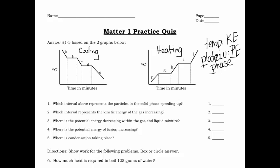Question one: which interval represents the particles in the solid phase speeding up? Whenever you see 'speeding up,' think kinetic energy — that means kinetic energy is changing, which means we're talking about a temperature change, so it's got to be one of the sloped portions of the graph. Since it says 'speeding up,' it's going to be the heating curve. Since it says 'solid,' we look for the sloped portion representing the solid phase — that's this one right here. The correct answer is letter F.